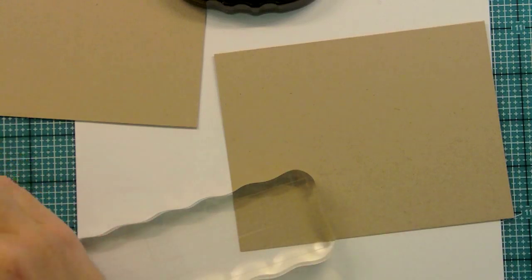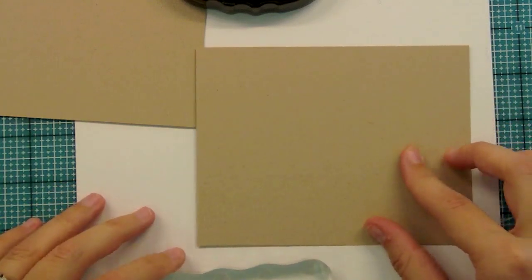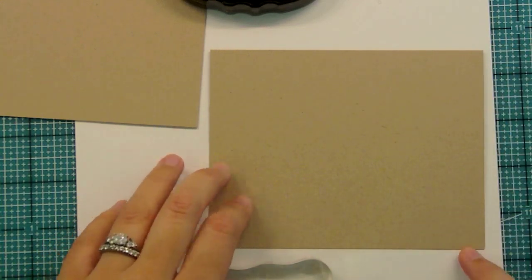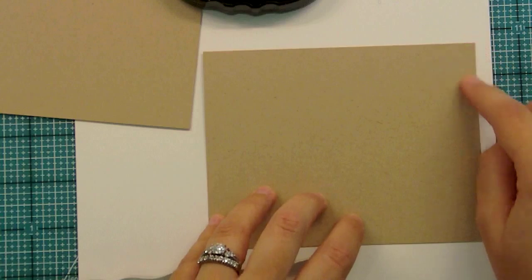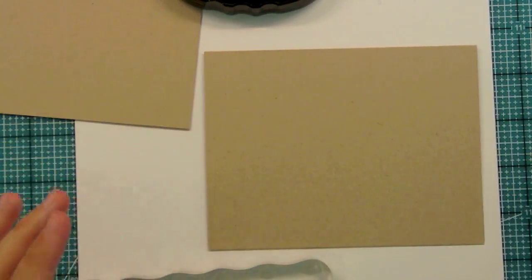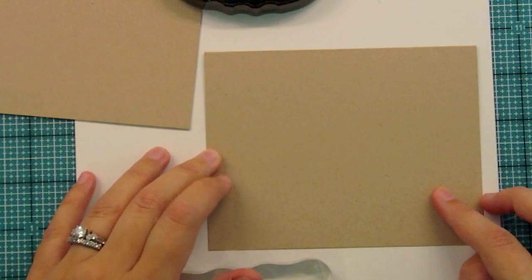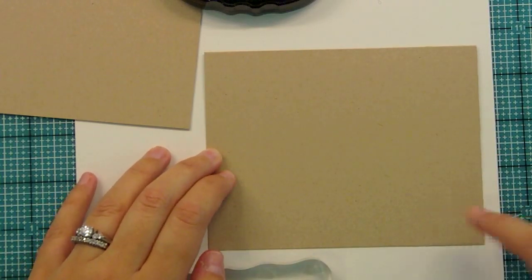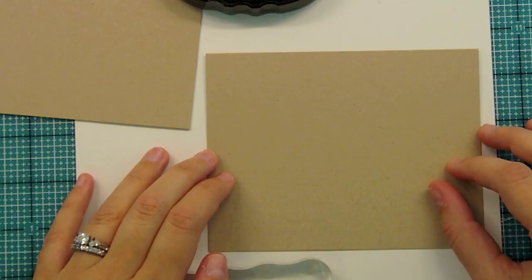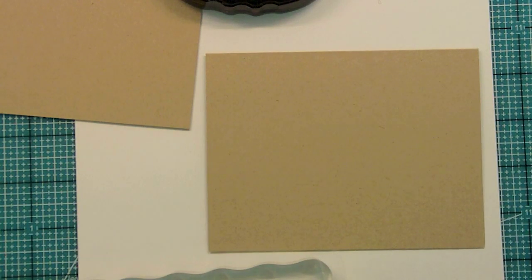One of the most exciting things about this stamp set is we made it long enough to fit the front of a standard sized card. A standard sized card is when you take your 8½ x 11 cardstock, cut it in half, and fold it. Your card ends up being 4¼ x 5½. Many background stamps out there only cover the 4¼ part, not the full 5½. So we created backdrop stamps that fit the entire front of the card.